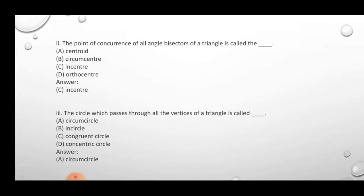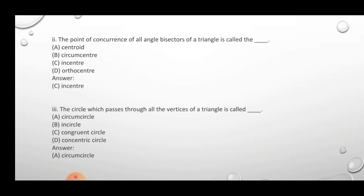Question 2: The point of concurrence of all angle bisectors of a triangle is called — since all angle bisectors intersect at one point, it is known as the incenter. Correct option is C. Question 3: The circle which passes through all the vertices of a triangle is called the circumcircle.